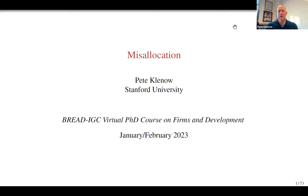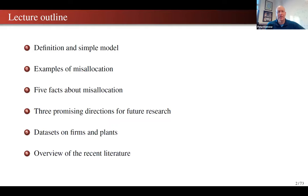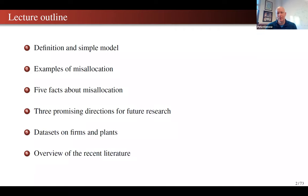Thanks very much for the introduction, Dave, and thanks for you and David for inviting me to participate. My outline is: I'll start with a definition and a simple model, then give examples of things that are and are not sources of misallocation, then talk about five facts documented in the literature, three promising areas for future research, and if time allows, some select papers that I particularly like and find insightful.